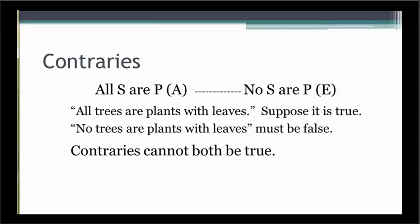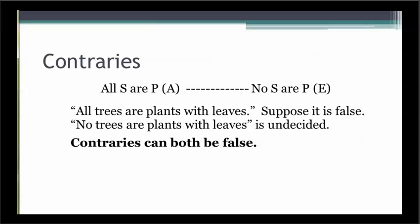Now let's look at the relationship of contraries. If all S are P is true, then no S are P is necessarily false. If the A claim 'all trees are plants with leaves' is true, then the E claim 'no trees are plants with leaves' must be false. Contraries cannot both be true. If you know that one contrary is true, you can infer that the other is false. However, if 'all trees are plants with leaves' is false, we do not know that 'no trees are plants with leaves' is true — it may be that 'some trees are plants with leaves' is true, which would also make the E claim false. So contraries could both be false, meaning if you start by knowing that one contrary is false, you still can't infer the truth value of its contrary.